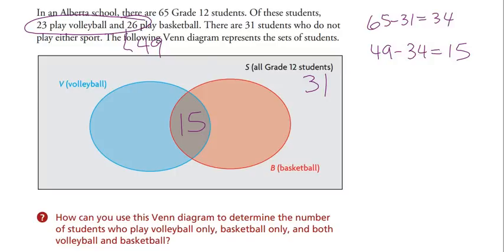If there's a total of 23 playing volleyball and 15 play both, then 8 play only volleyball. If there's a total of 26 playing basketball, then 11 play only basketball. And 8 plus 15 plus 11 is 34, plus 31 is 65.